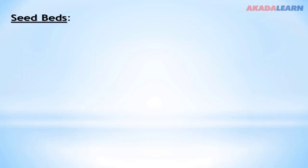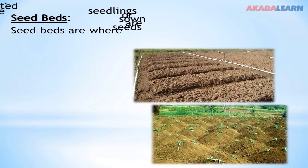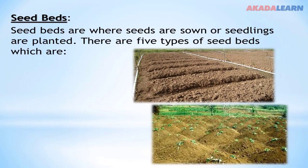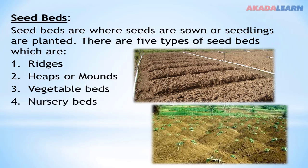Seedbeds. What are seedbeds? Seedbeds are where seeds are sown or seedlings are planted. There are five types of seedbeds: number one — ridges; number two — heaps or mounds; number three — vegetable beds; number four — nursery beds; number five — flat soils.